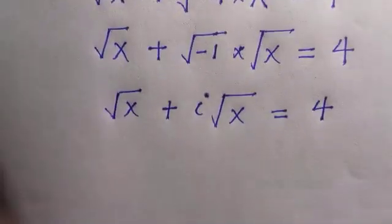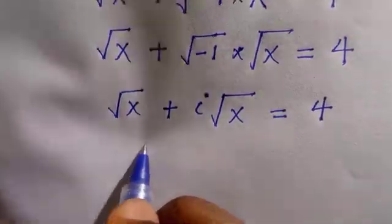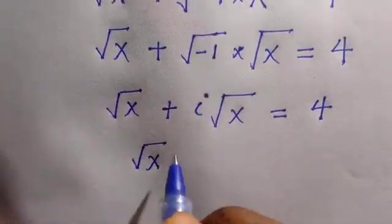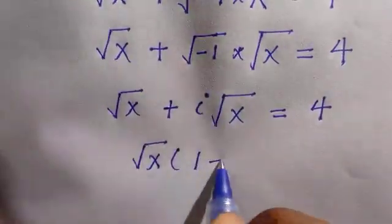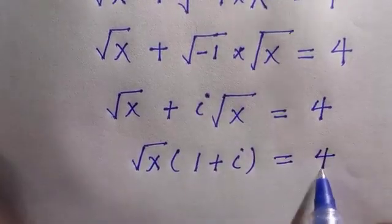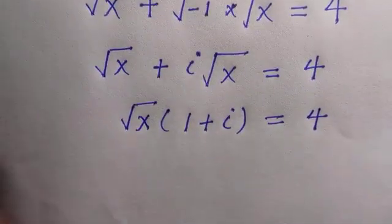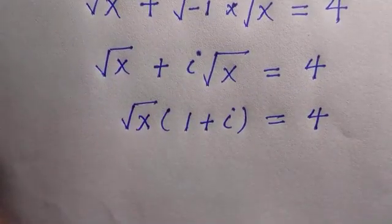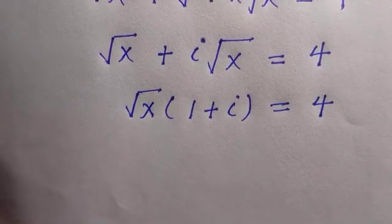Looking at this, we have root x that is common. We take it out and we are left with 1 plus i equals 4.